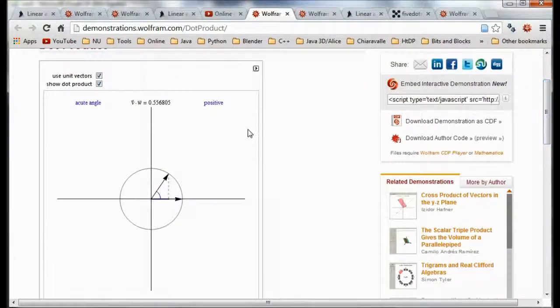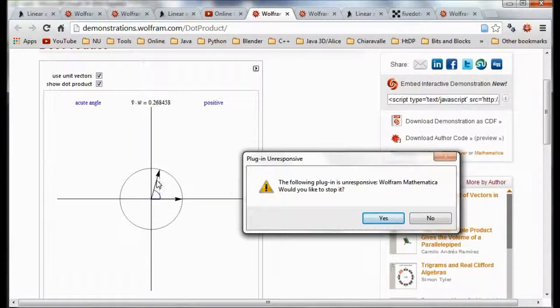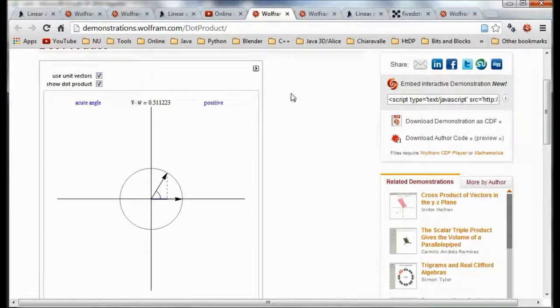You can move this around and see what happens to the dot product. It gets smaller and smaller as we get close to being perpendicular and right to zero if they're perpendicular. If they're pointed in exactly the same direction, the shadow lengthens until it gets to one. The shadow gets smaller and smaller, and then if we start going in the opposite direction to an obtuse angle, we start getting a negative dot product until we go all the way over to minus one.